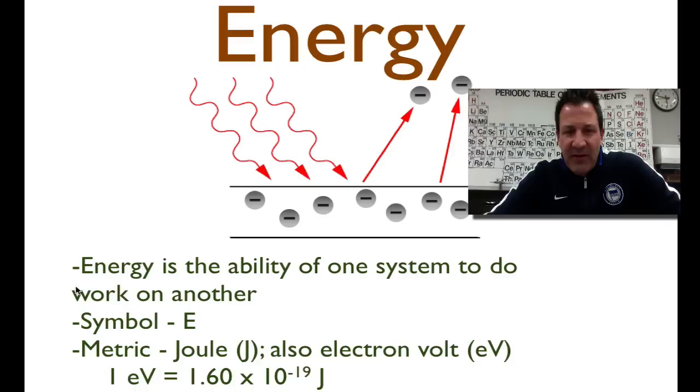It has the symbol E. The metric unit is the joule, named after James Prescott Joule. It can also have the unit electron volt, especially when we're talking about electrons moving through a voltage difference, which we can talk about when we talk about the Bohr model and emission spectra. But they are just units of energy, and they're very easily converted from one to the other through this conversion factor, which is one electron volt equals 1.6 times 10 to the minus 19 joules.